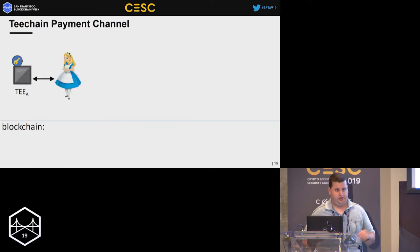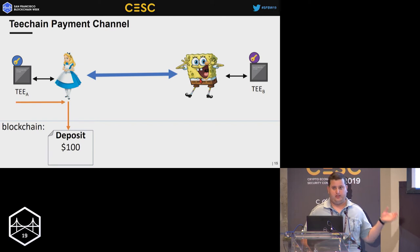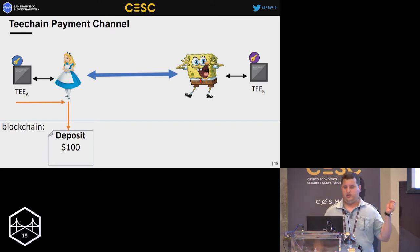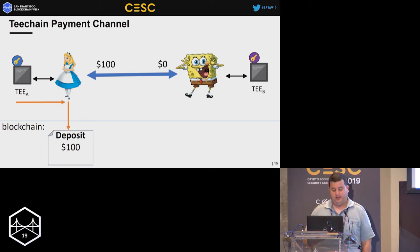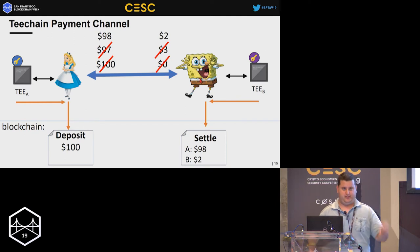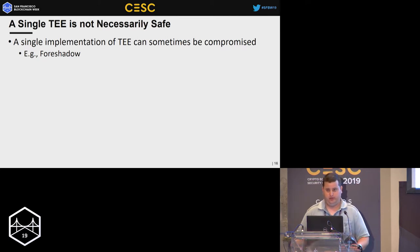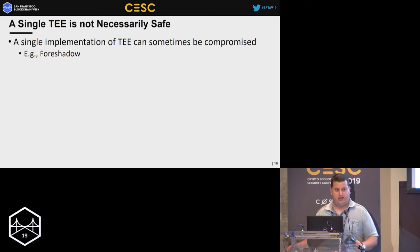Let's look at an example. Alice and Bob each run a TEE. They create a deposit placed on-chain, but now the deposit is created with a secret key stored inside Alice's TEE. They can start paying one another. When Bob wants to settle, he instructs his TEE to create a settlement transaction — with a secret key he doesn't know but is stored inside the TEE — and places it on-chain. But a single TEE isn't necessarily safe. Real implementations like Intel SGX can be compromised; the most prominent example is Foreshadow, which broke SGX and exposed stored secrets before Intel issued its patch.